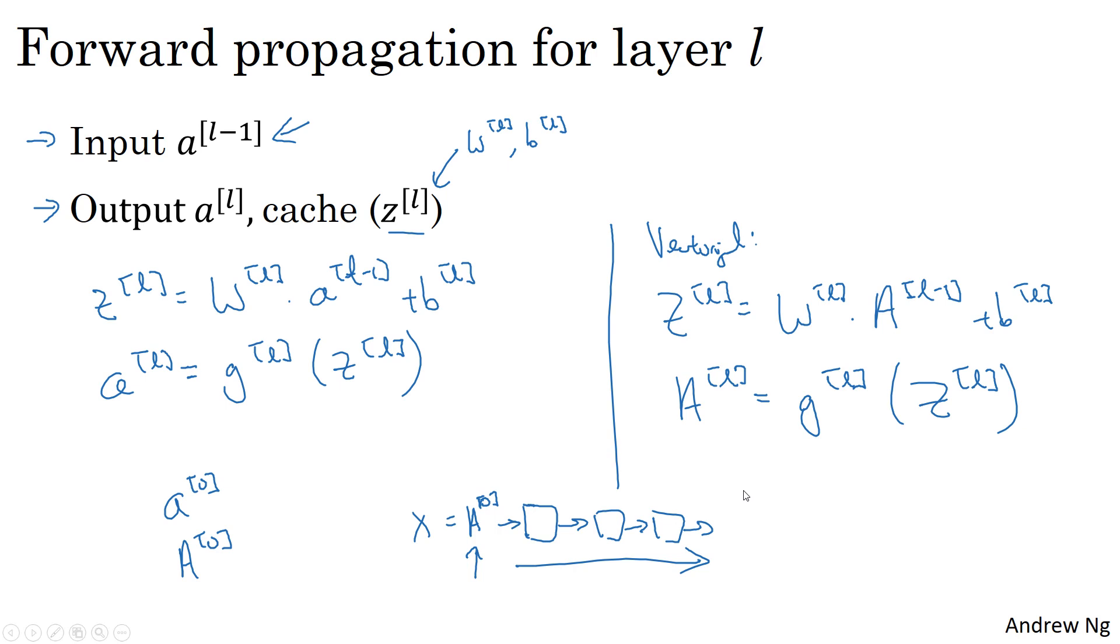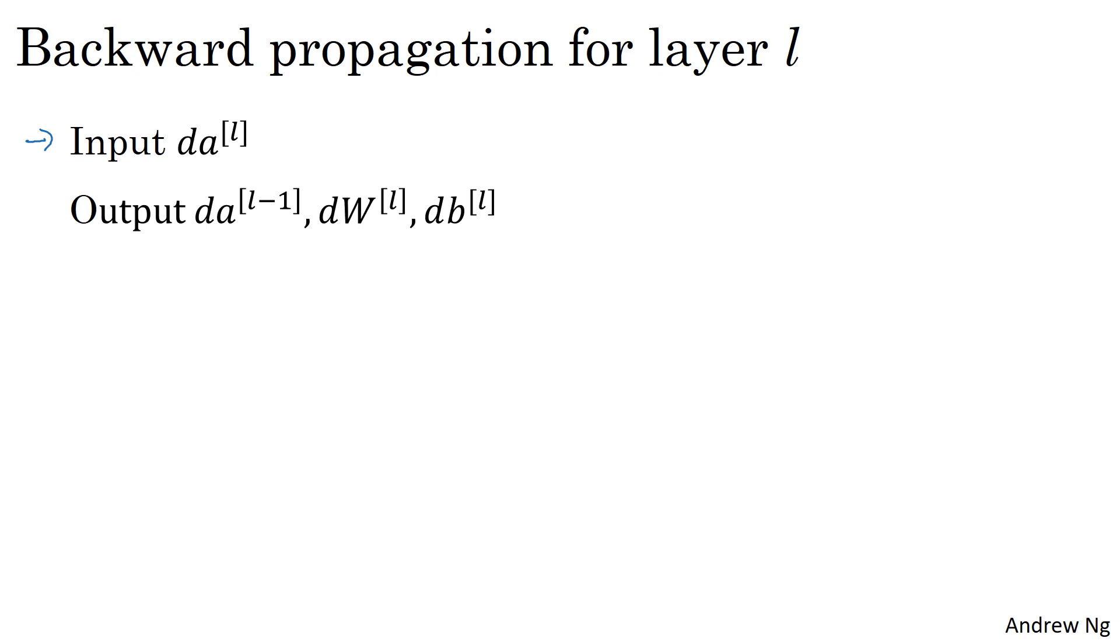Next, let's talk about the backward propagation step. Your goal is to input da^(l) and output da^(l-1), dW^(l), and db^(l). Let me write out the steps you need to compute these things. dz^(l) equals da^(l) element-wise product with g^(l) prime of z^(l). Then compute the derivatives: dW^(l) equals dz^(l) times a^(l-1). And db^(l) equals... actually, da^(l-1) equals W^(l) transpose times dz^(l).